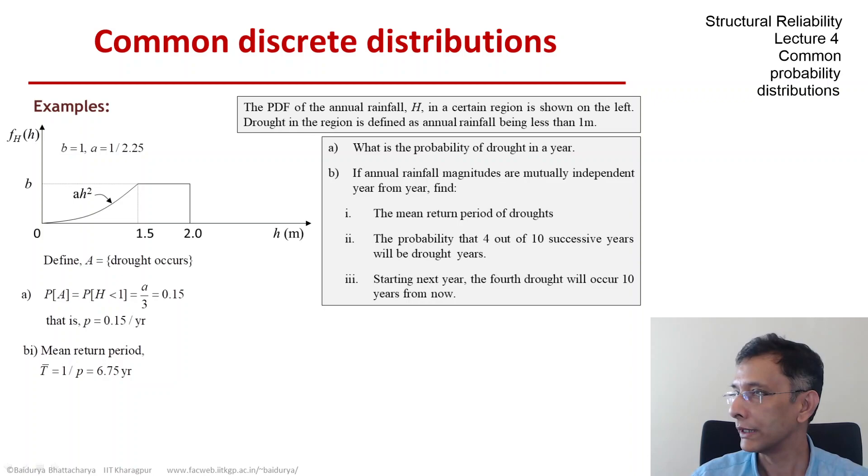The next question asks what is the probability that out of 10 trials, 4 will be success, success being the occurrence of a drought. This is clearly a binomial PMF that has been asked for, and using n equals 10 and x equals 4, we come up with the answer of about 4 percent.